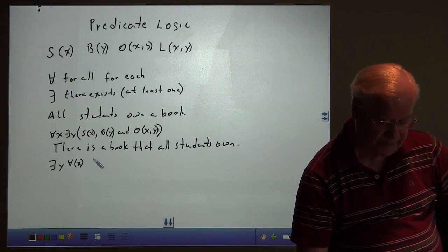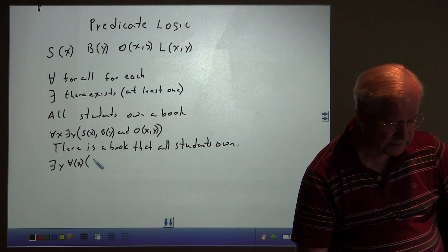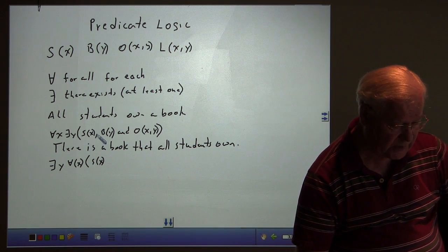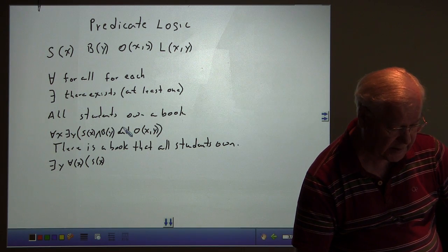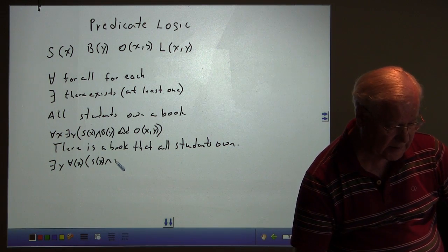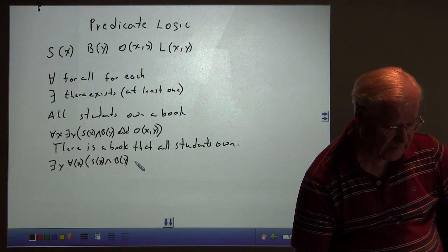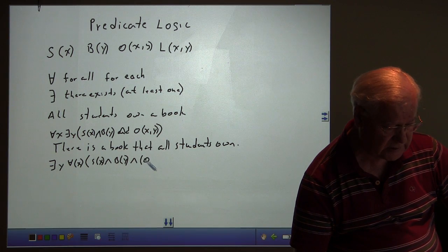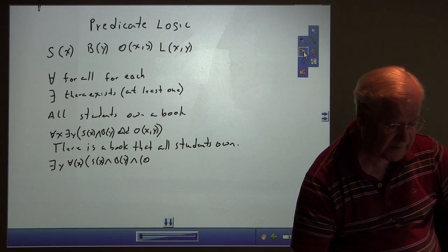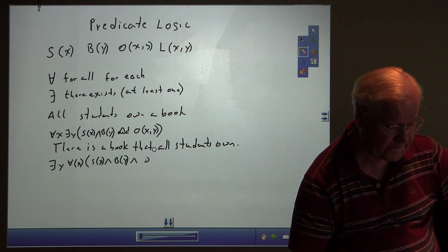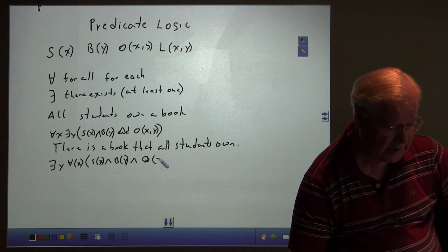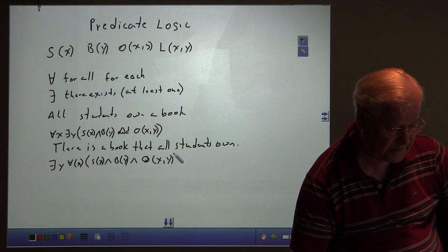So, notice the implication there. There exists Y for all students, such that student, X is a student. When we can put, if we wanted to, we could put and signs here so it begins to look like what we had before in propositional logic. So, we could say and Y is a book, and students own the book. Okay.